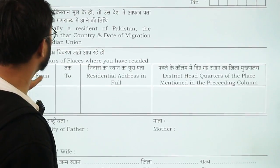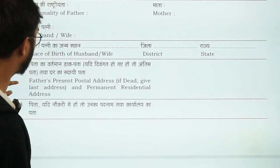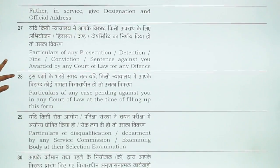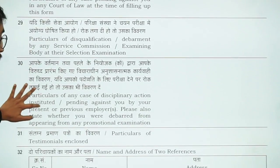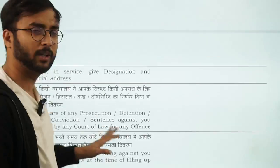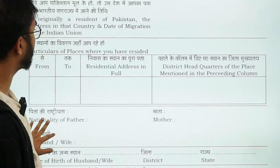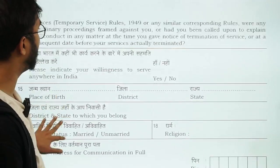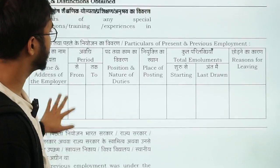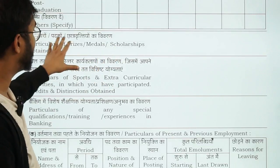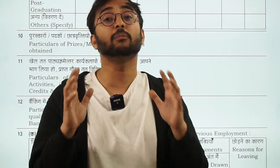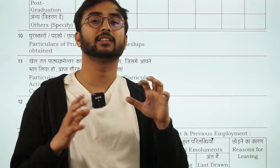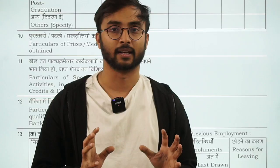Then comes miscellaneous data — particulars of any case pending against you — which you fill as yes or no, and you should not expect questions from this section. To summarize, the sections on your address, place of birth, employment, prizes, medals, scholarships, hobbies, sports, extracurricular activities, training, experiences, and educational qualification — these are the game-changers for a candidate's selection. This is where candidates will be judged most critically, so be prepared.